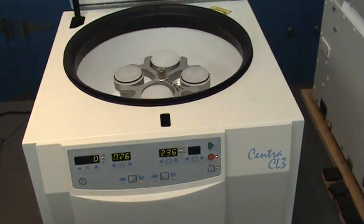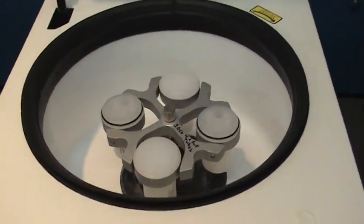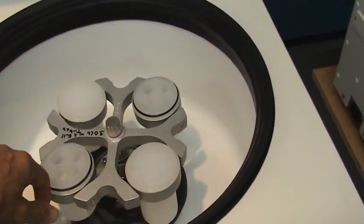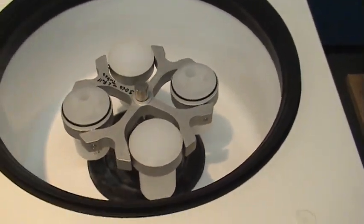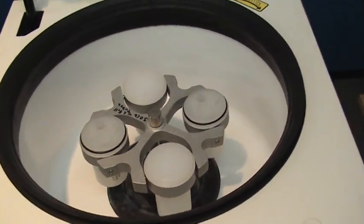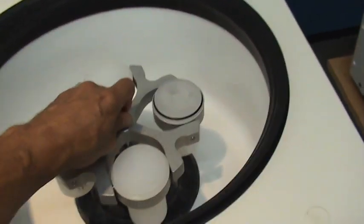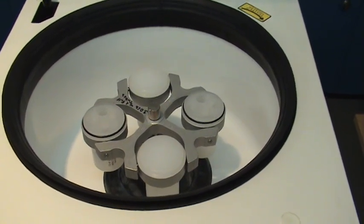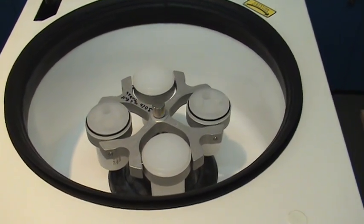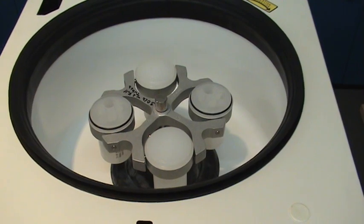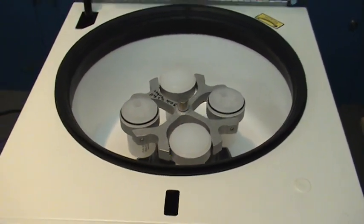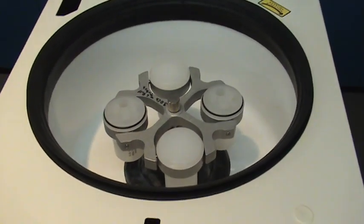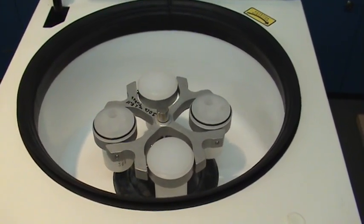If we open the lid of the centrifuge, this particular model has a standard rotor. This rotor when fully loaded weighs about 3 pounds and you'll see that this centrifuge has a mechanism built into it that allows the rotor to adjust to some extent to the imbalance of the centrifuge load. This particular centrifuge is capable of tolerating about 10 grams of imbalance mass.